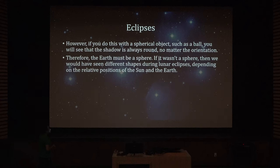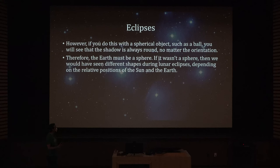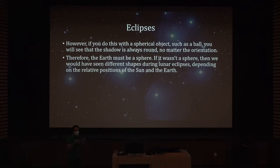Therefore the Earth must be a sphere, because if it weren't, we would see different shadow shapes during lunar eclipses depending on the relative positions of the Sun and Earth — sometimes round, sometimes a line, and everything in between.